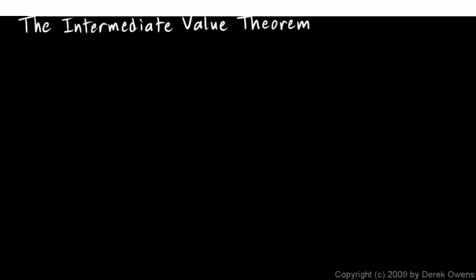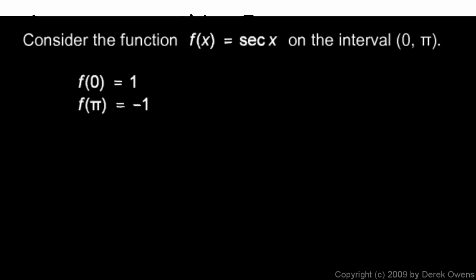We're continuing with examples of the intermediate value theorem. Here's the next one: consider the function f of x equals secant x on the interval 0 to pi. Let's look at an example involving a trig function.